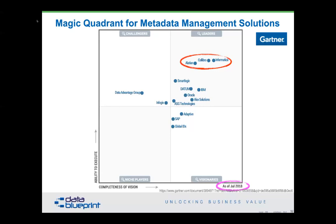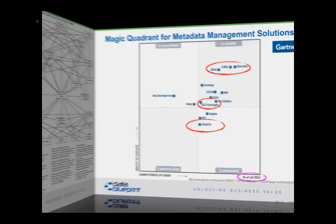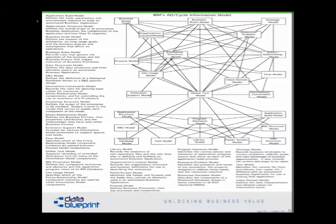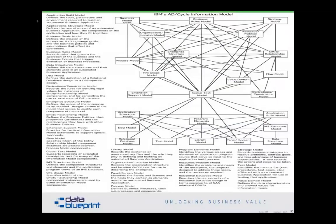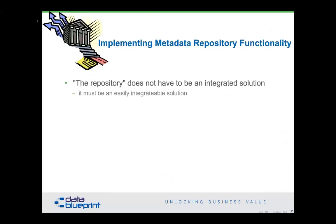IBM published some texts — if you Google 'IBM AD Cycle Information Model,' they put together the metadata model to rule all metadata models. It shows how all these are related, and most importantly, it's wonderfully developed metadata material that you can use in your projects as a starting point. You do not need to start from scratch. There are lots and lots of templates and patterns you can use. My colleague Mike Gorman also has a simplified worker version of this that is extremely useful.